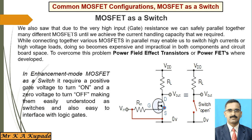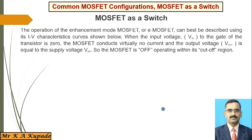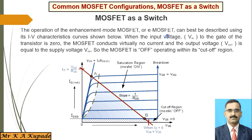To understand exactly how it works, we have to consider the VI characteristics of this particular MOSFET. The operation of an enhancement MOSFET can be best described using the VI characteristics curve, which is shown in the following figure. When the input voltage Vin to the gate of the transistor is zero, virtually no current flows and the output voltage Vout equals the supply voltage VDD.